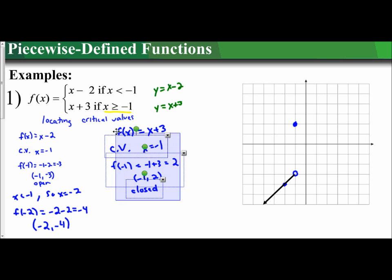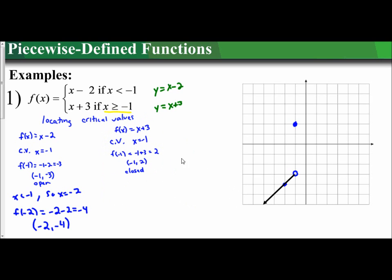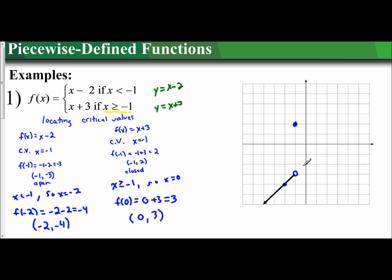We need one more point. Since x has to be greater than or equal to negative 1, I'll use x equals 0 — a nice, easy value. The function is defined at x equals 0 as x plus 3, so 0 plus 3 equals 3, giving the coordinate 0, 3. I plot that point and sketch the line through it starting at the critical value.